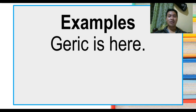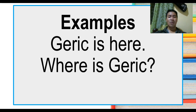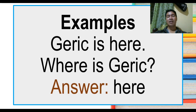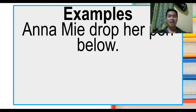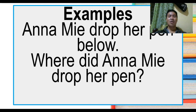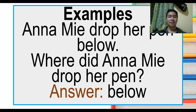Example sentence: Jeric is here. Question — where is Jeric? The answer is here — adverb of place. Another example: Anami dropped her pen below. Question — where did Anami drop her pen? The answer is below.